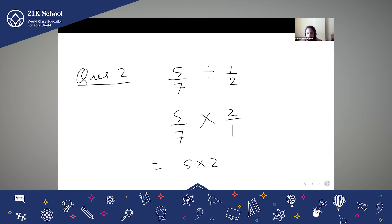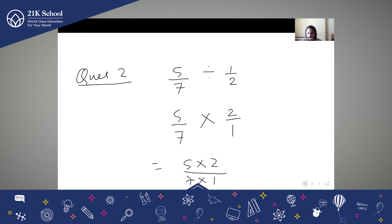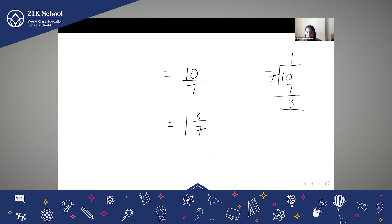So now we multiply. Multiplication is very simple — multiply the numerators upon multiply the denominators. So 5 × 2 is 10, and in the denominator 7 × 1 is 7. Now 10/7 — we all know — is an improper fraction. 7 ones are 7, remainder is 3. So it is 1 whole 3/7 as the final answer.